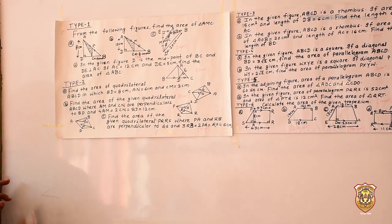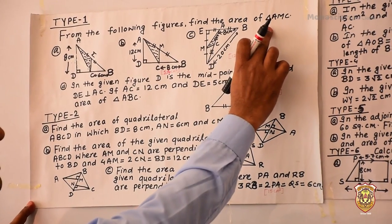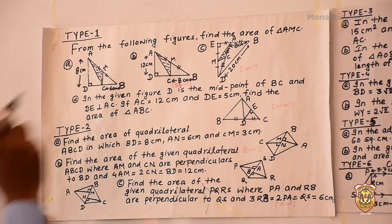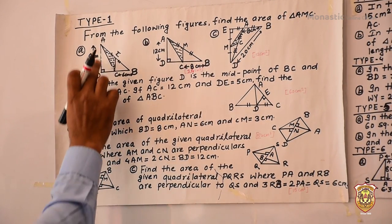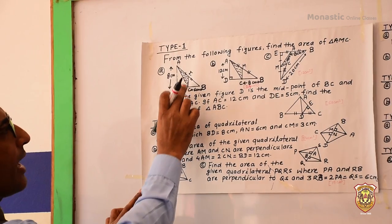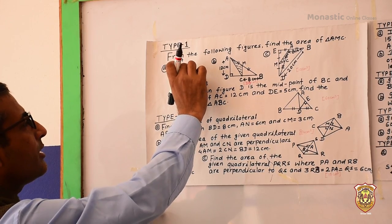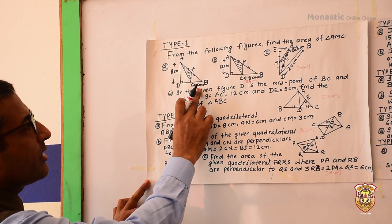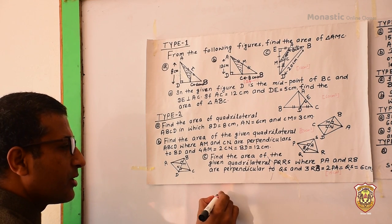Look at the first figure. In all these figures, we have to find the area of triangle AMC. In the first figure, you can see triangle ABD. AD is perpendicular to BD. C is a point here, and M is the midpoint of AB. We have to find the area of triangle AMC. BC is given as 6 cm and AD is given as 8 cm.